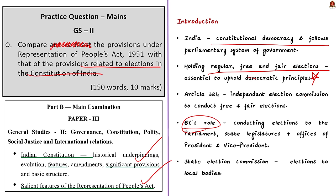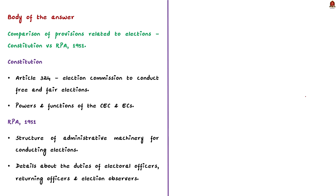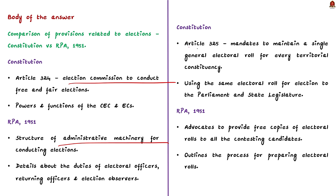For the body, compare constitutional provisions with RPA 1951 provisions. First, the Constitution under Article 324 provides for the Election Commission to conduct free and fair elections and deals with the powers of the Chief Election Commissioner and Election Commissioners. On the other hand, RPA 1951 provides details about the administrative machinery for conducting elections — the duties of Chief Electoral Officer, District Electoral Officers, Returning Officers, and Election Observers. Second, the Constitution under Article 325 mandates maintaining a single general electoral roll for every territorial constituency, and the same roll is used for elections to Parliament and state legislatures.